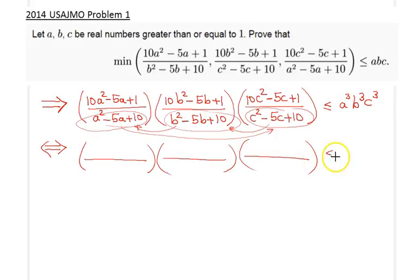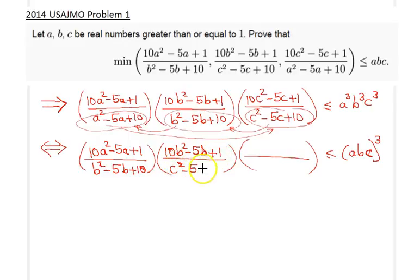So let's go ahead and do that. We'll still have three fractions here less than or equal to abc³. On the left, the numerators will not change. In the first expression, the denominator will be the b expression here, b² - 5b + 10. In the second one, the numerator does not change, divided by c² - 5c + 10. And finally, the denominator will be the a expression, minus 5a + 10.